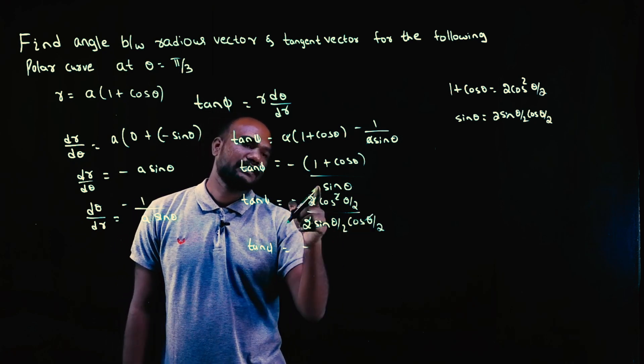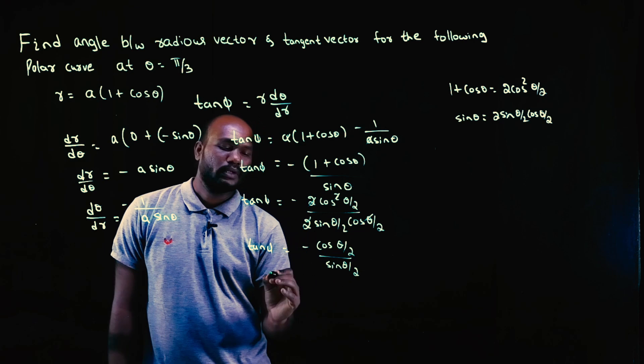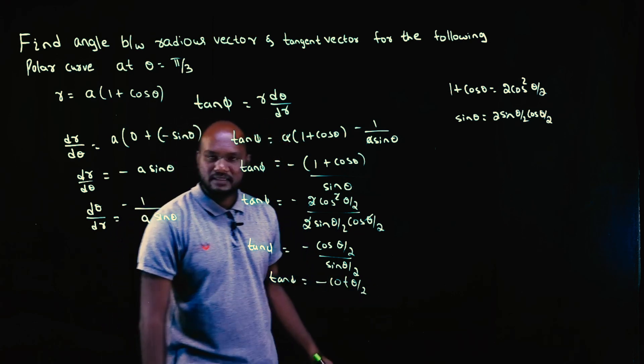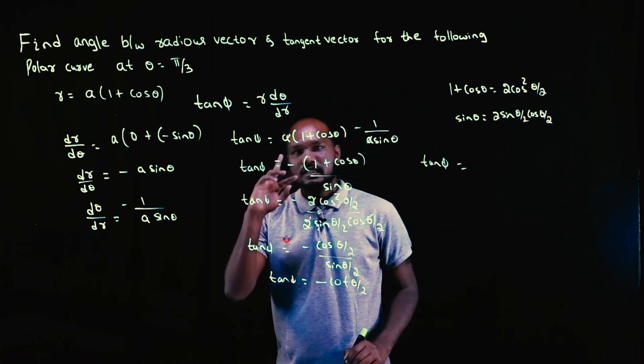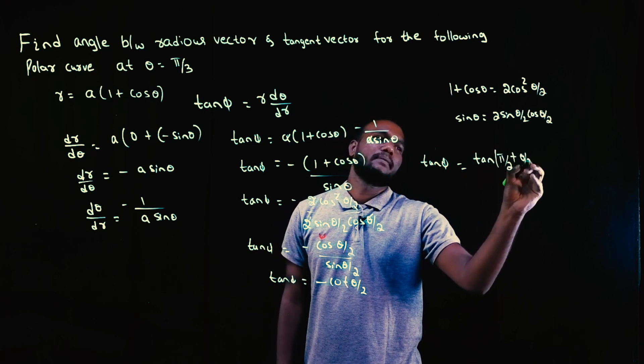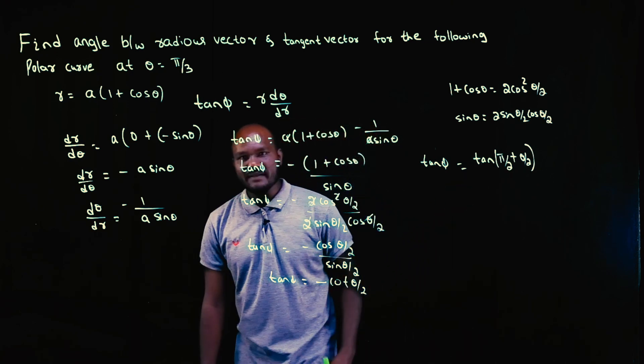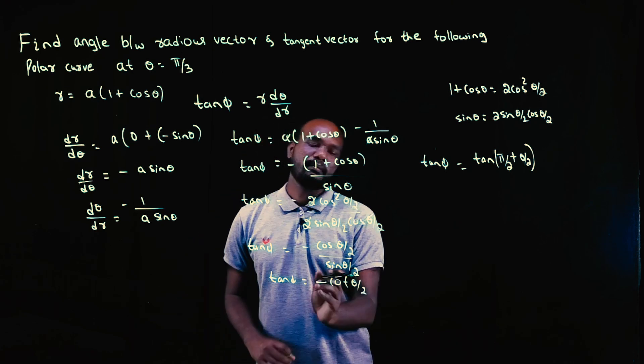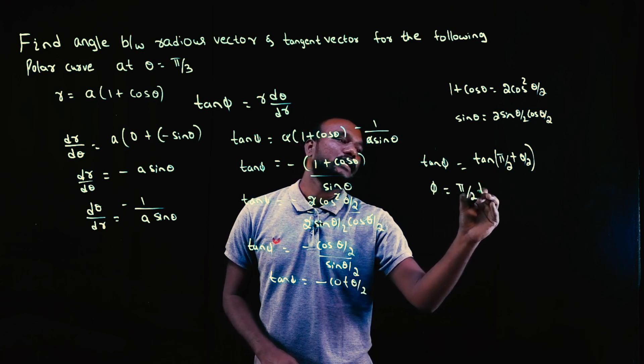So tan phi equals minus cos theta by two over sine theta by two, which is minus cot theta by two. How can we write this? Tan phi equals minus means it is in second quadrant, so I'll take it as tan of pi by two plus theta by two. To understand how to go from here to here, we have created an entire course—check that out. The link is in the description. So the phi value is pi by two plus theta by two.